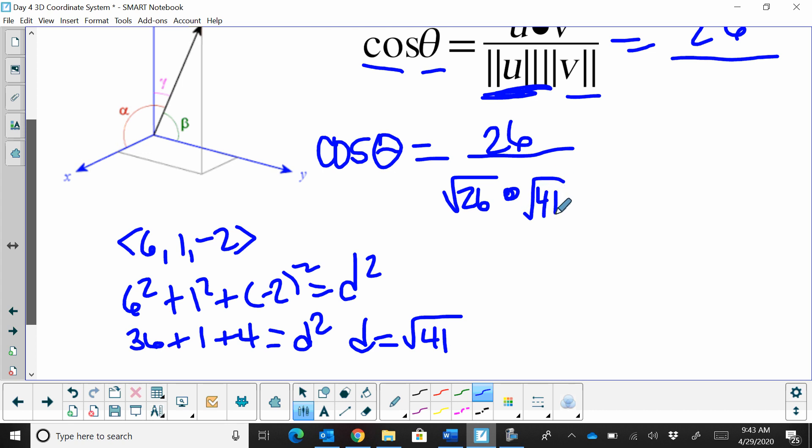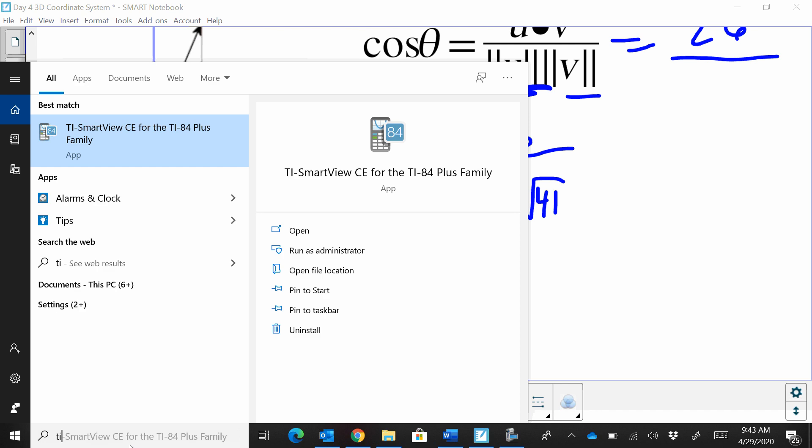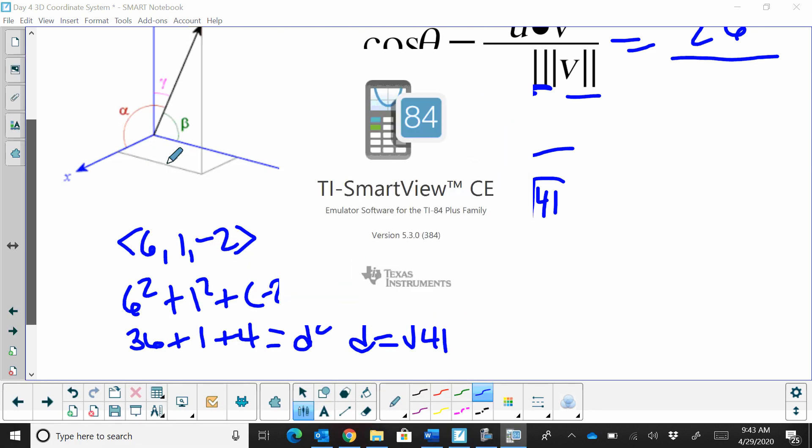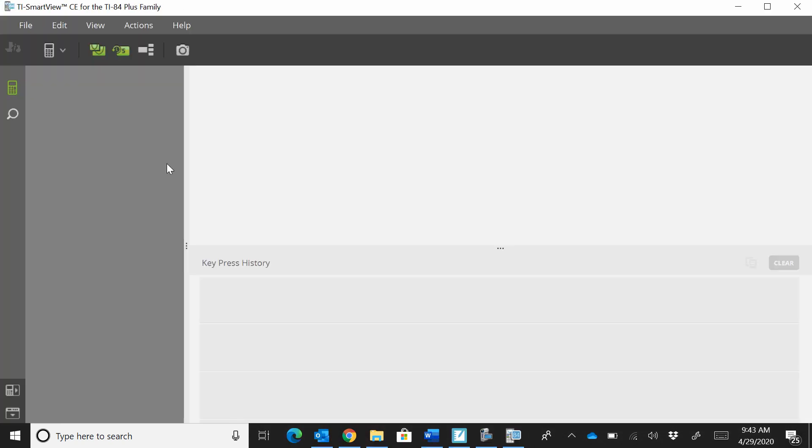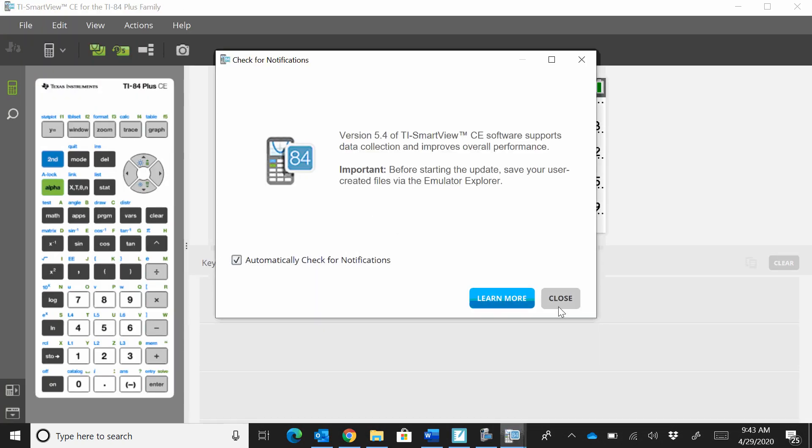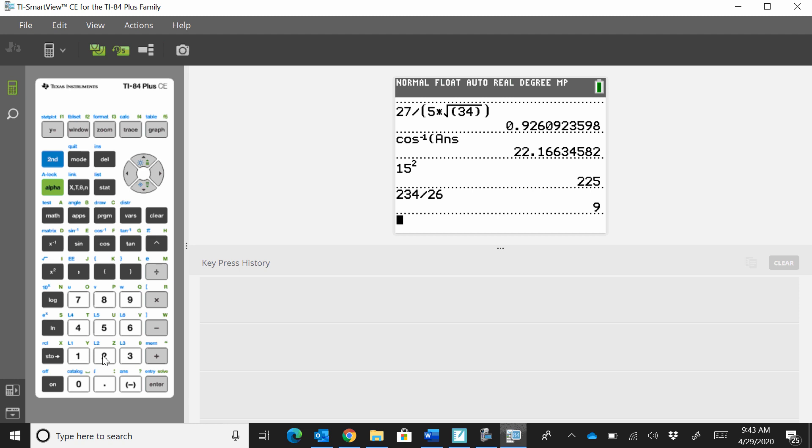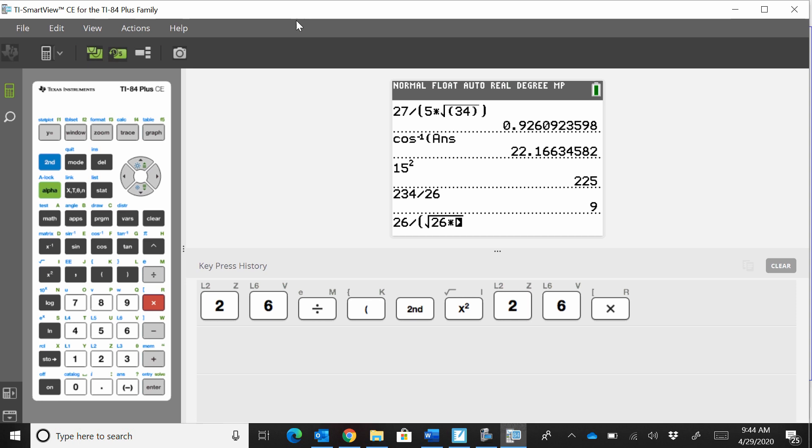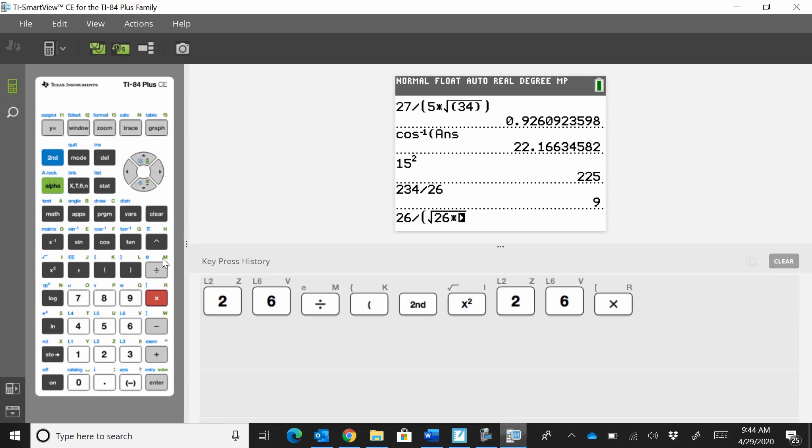So now we've got to grab our handy-dandy calculator. So let me grab a calculator here. And we've got to type it in the calculator. So let's take 26 divided by, and I'm going to put parentheses around my denominator, the square root of 26 times the square root, which I can just leave it under one radical because that's the same, of 41.